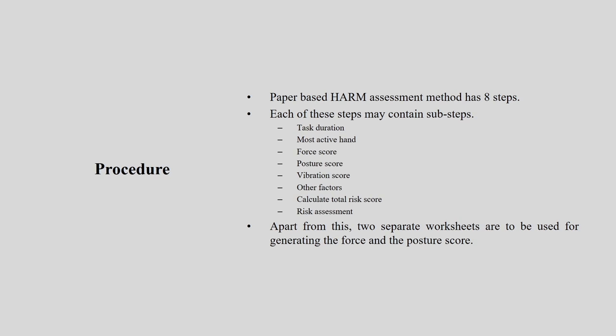The paper-based HARM assessment method has eight steps, each with sub-steps. The main steps are: task duration, most active hand (left or right), force score, posture score, vibration score, and other external factors. Once done, you calculate the total risk score and perform the risk assessment. These are compulsory steps. For the online version, some steps may be done in the back end and you get results directly.